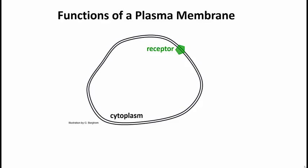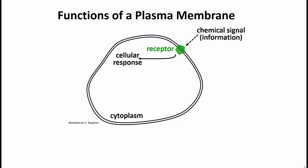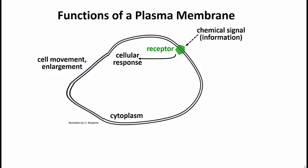This is a cell. It has multiple functions based on the proteins that are in the membrane. Some proteins are receptors for receiving chemical signal information — that's number one on this slide. Some of the proteins are required in an amoeboid cell to get movement and enlargement of a cell and to change its shape.